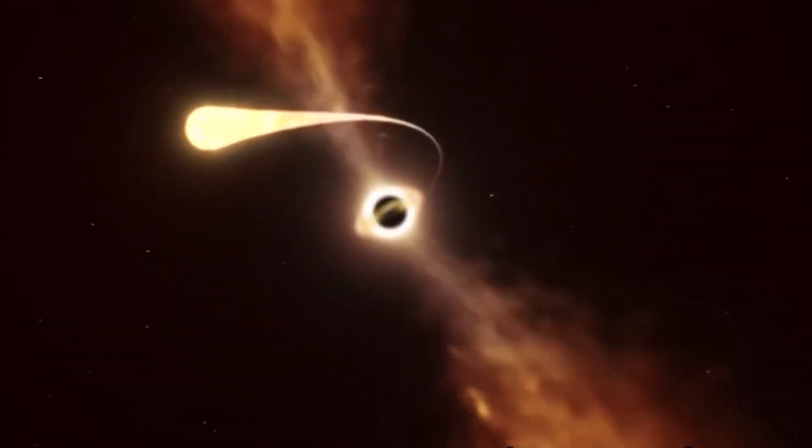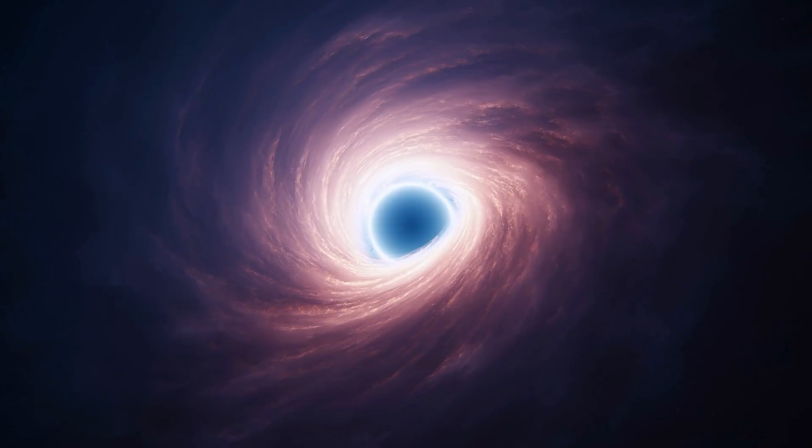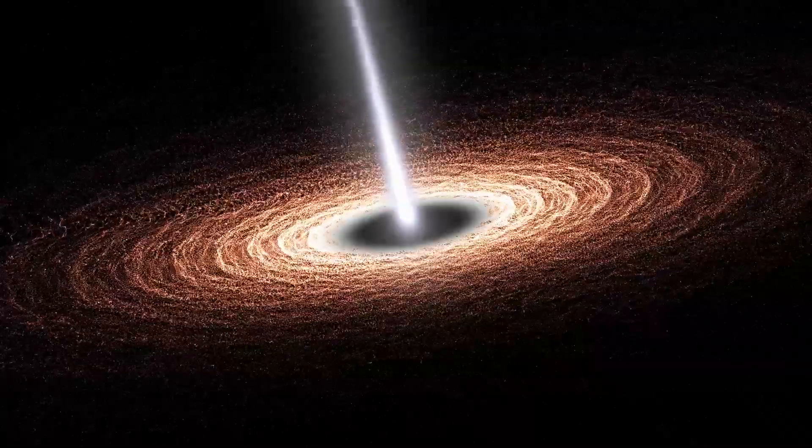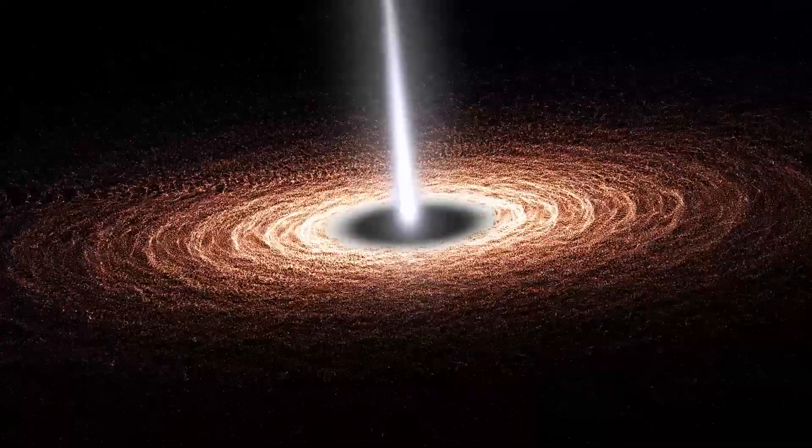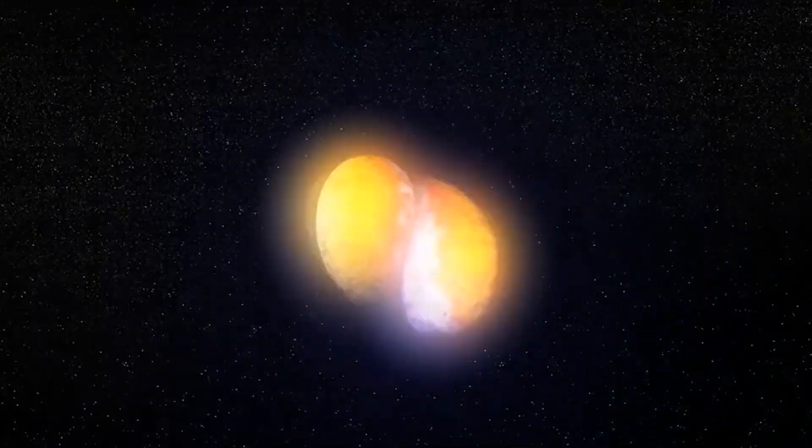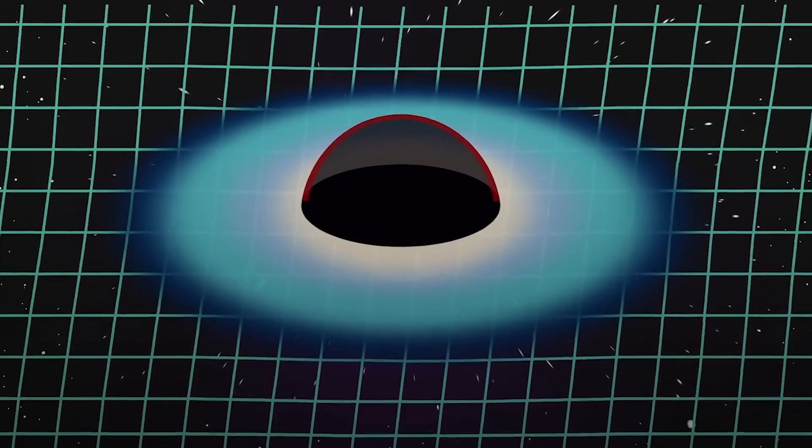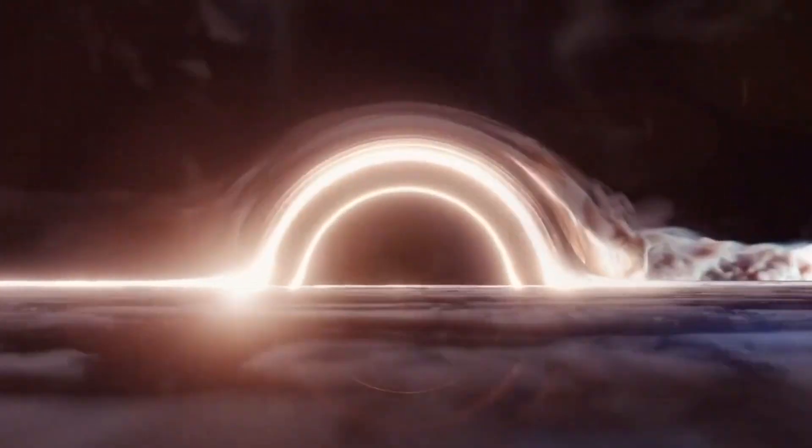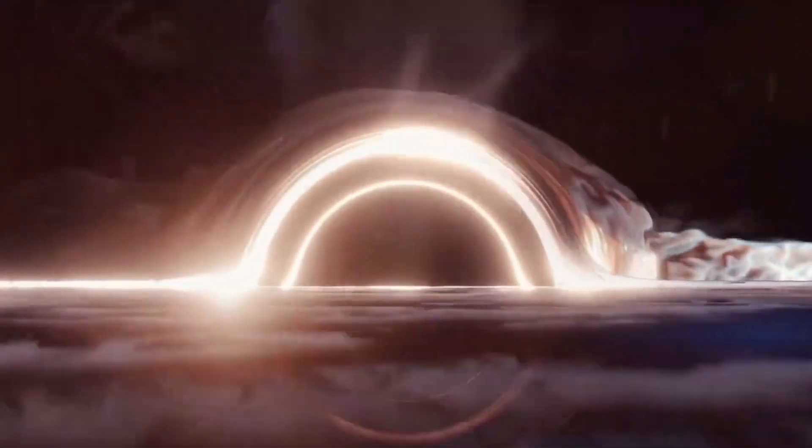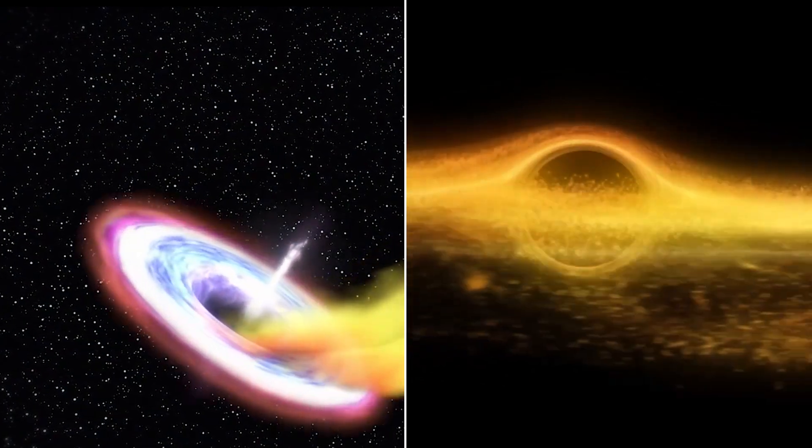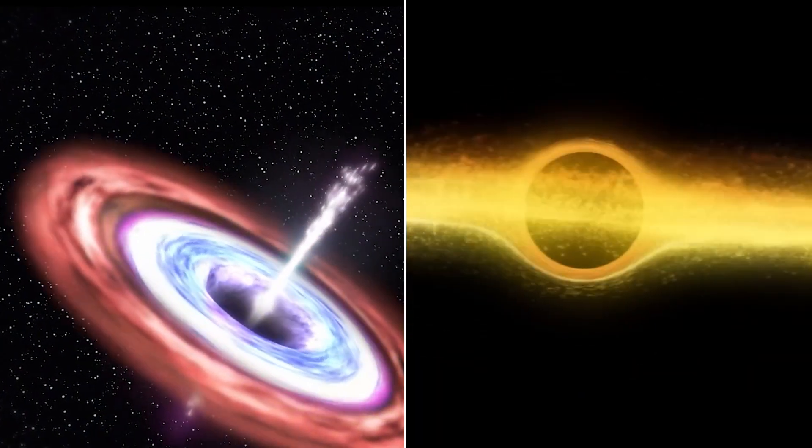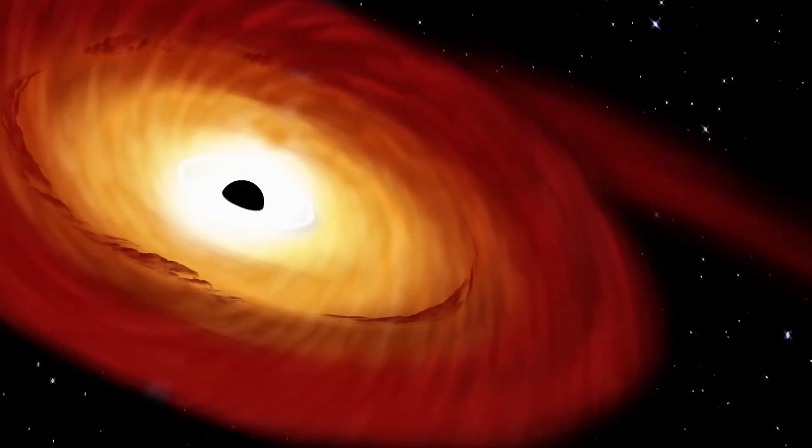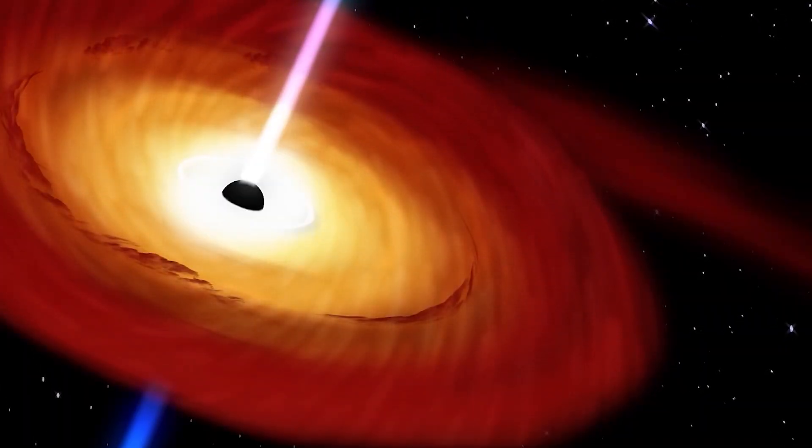But sometimes some of the stuff that gets sucked in by the black hole decides to rebel and escape. It does so by forming a jet, which is like a cosmic sneeze, blasting out energy in a narrow beam. This happens when some of the matter falling into the black hole gets twisted and flung out by the magnetic fields and the spinning motion of the black hole. These jets are so fast and furious that they can zoom across the galaxy and beyond. They're also so bright and flashy that they can outshine billions of stars.